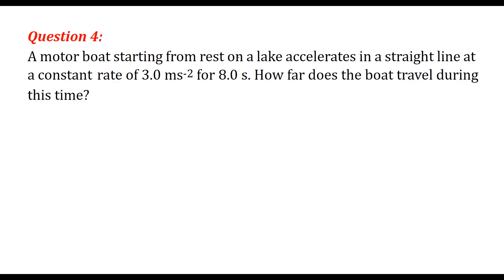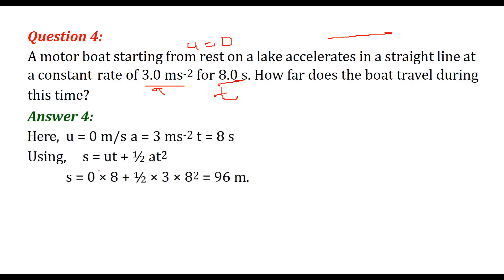A motorboat starting from rest, so initial velocity u equals 0, accelerates on a lake in a straight line at 3 meters per second squared. Time is 8 seconds. How far does the boat travel? Using the formula s equals ut plus half a t squared, with u equal to 0, a equal to 3, t equal to 8, we get s equal to 96 meters.